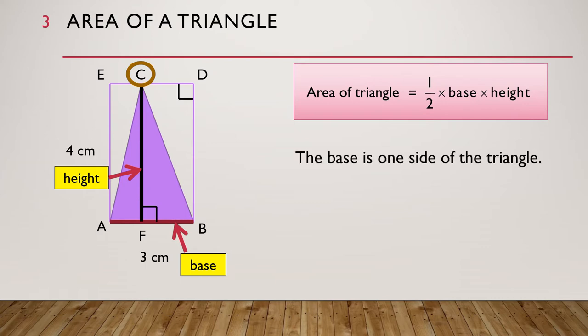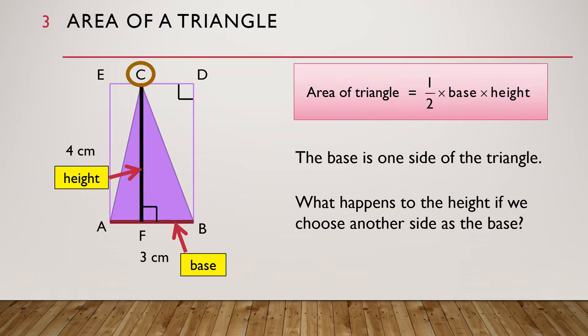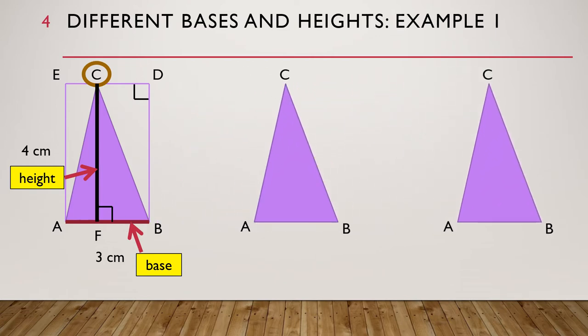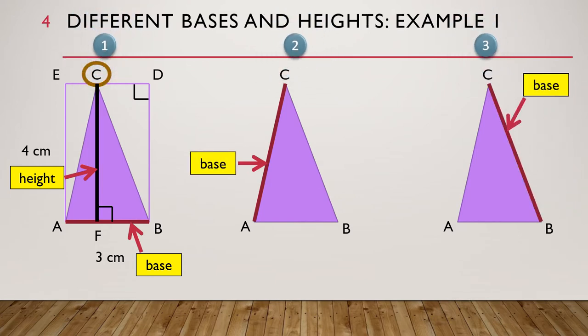Notice that the base is one side of the triangle. What happens to the height if we choose another side of the triangle as the base? Let's find out. We have our triangle ABC. As the triangle has 3 sides, there are 3 possible choices for the base.